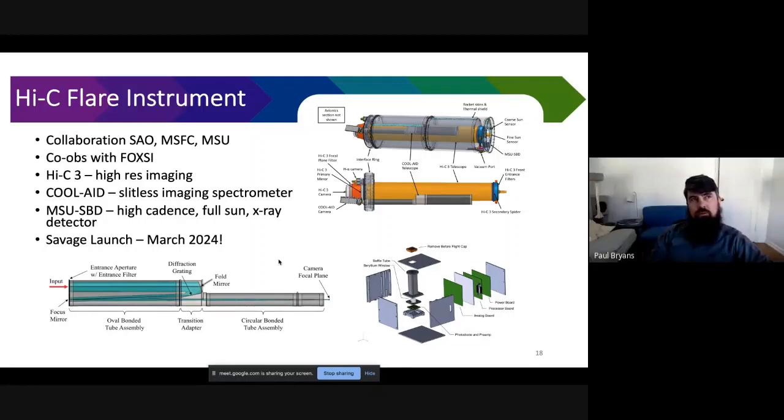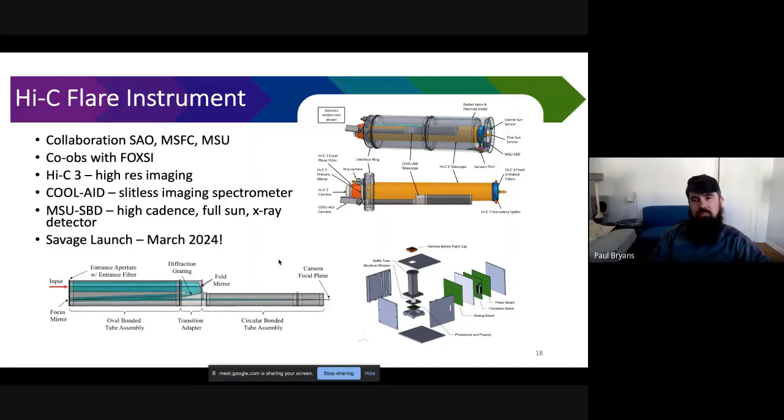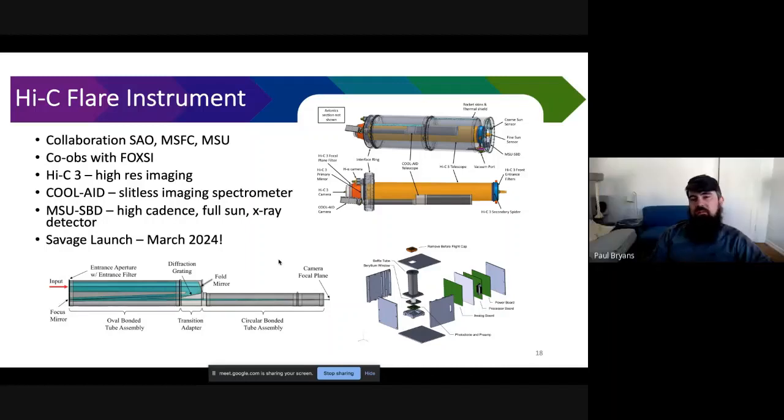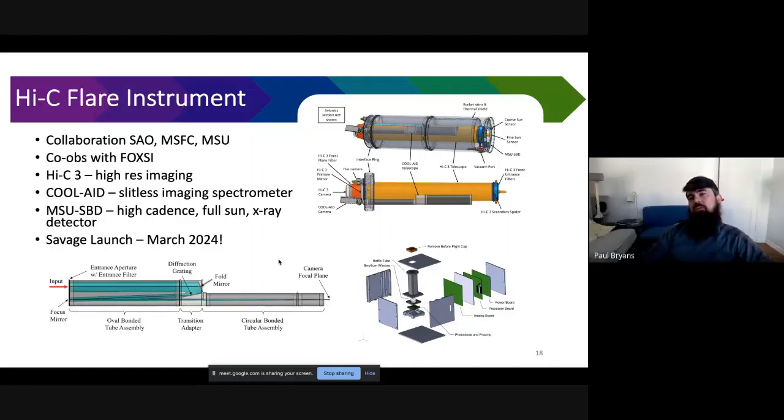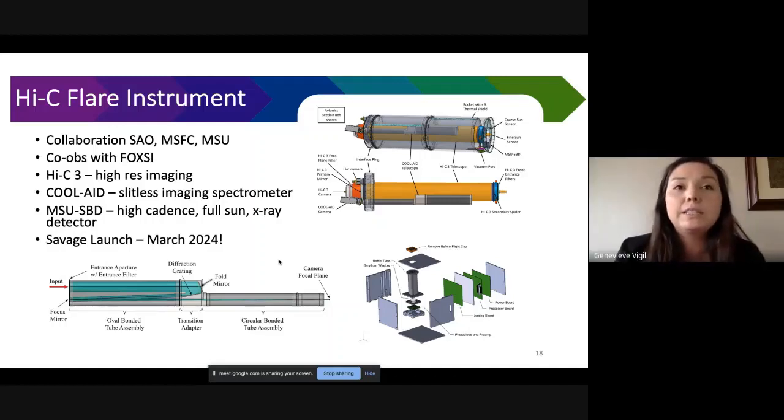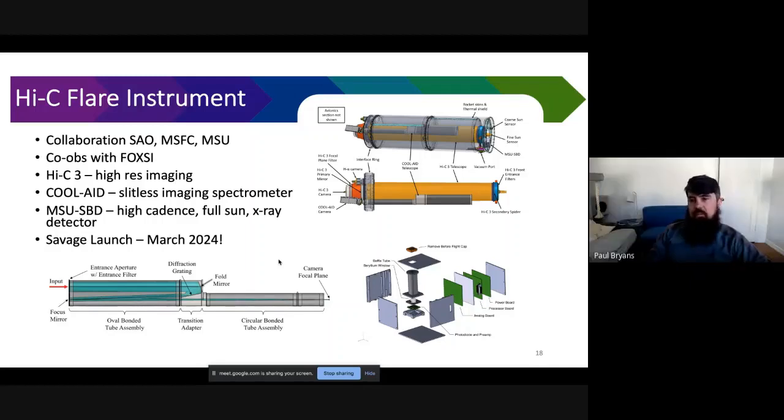Once you detect a flare and you launch, how long from that point until you actually get observations? From when we launch to getting access to the data, the turnaround is about a day. Oh I wasn't really asking about access to the data. I just meant when you actually start observing. Oh okay, well from our launch it only takes a couple minutes to get above the atmosphere on these launches, so maybe 60 seconds from launch time.